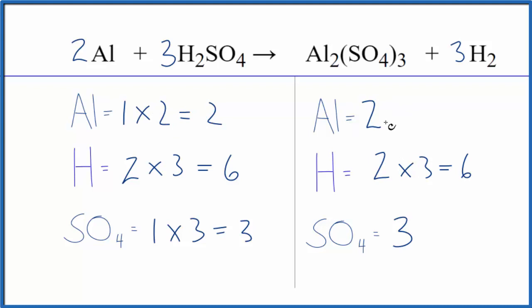We're done. This equation's balanced. It's a lot easier when you consider polyatomic ions as one thing when they're on both sides. Either way, you get the same answer. This is just a lot quicker, and that matters when you're taking an exam.